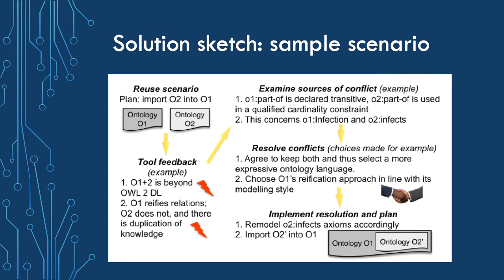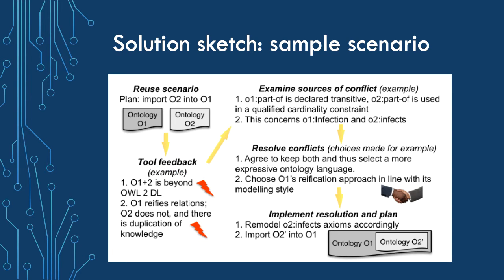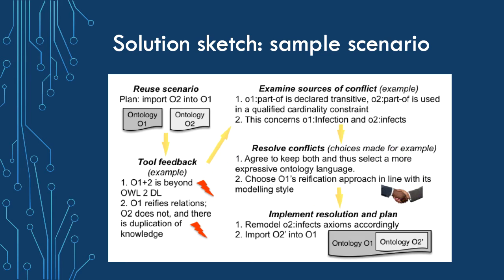Here is a bird's-eye view of a conflict resolution process for the reuse scenario. At the top left, the user wants to import ontology O2 into O1. This is inputted to a conflict resolution tool, which then returns an assessment of that intention before going ahead. In this case, it winds up two key issues: if the user were to go ahead, the merger would be beyond AL2DL, and it has found a class versus property modeling style conflict. The user then looks at which axioms are involved, chooses what to do based on the available options, and then implements it.